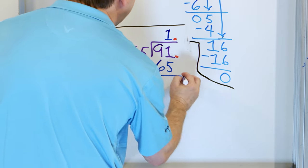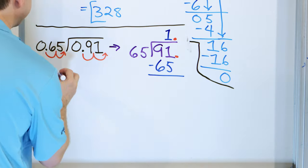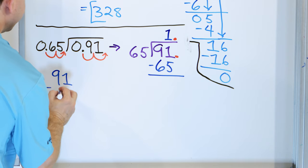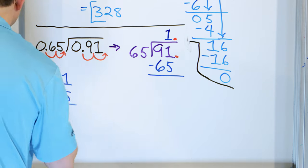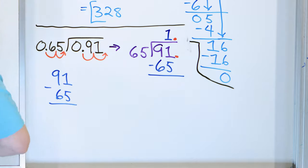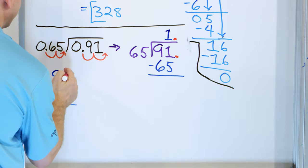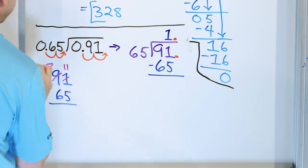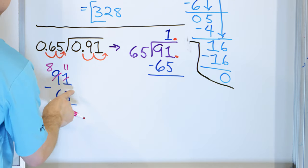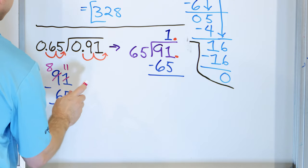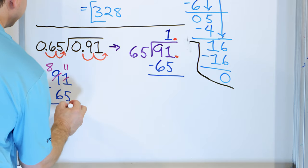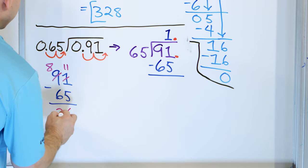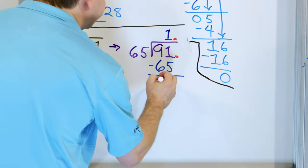Put a 1 right here, multiply to get 65, and then subtract. We have to do a little borrowing, so let's go over here and do 91 minus 65. We can't do 1 minus 5, so make it 11 and borrow — that becomes 8. 11 minus 5 is 6, 8 minus 6 is 2. So the answer is 26. We put 26 down here.